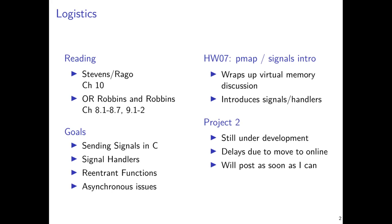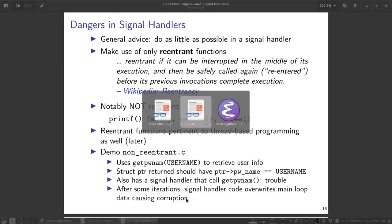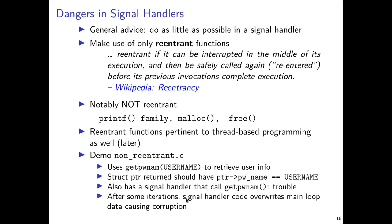We also saw that the sigaction function is the most recommended way to set up a signal handler. We're going to continue now with the discussion of reentrant functions and issues that arise with the asynchronous delivery of signals. This is covered in more detail in Stevenson Rago Chapter 10, our official textbook. Alternatively, you can look at Robinson Robbins, an older textbook sometimes associated with 4061.